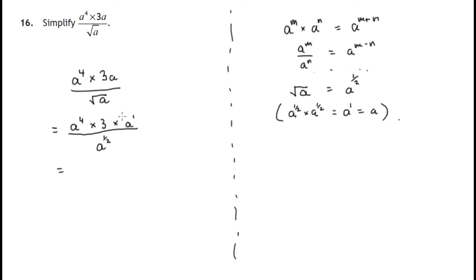So let's sort out the top line. We have 3 times a to the power of 4 times a to the power of 1. Add the indices: 4 plus 1 is 5. So 3 times a to the power of 5. On the bottom we have a to the power of 1 half.